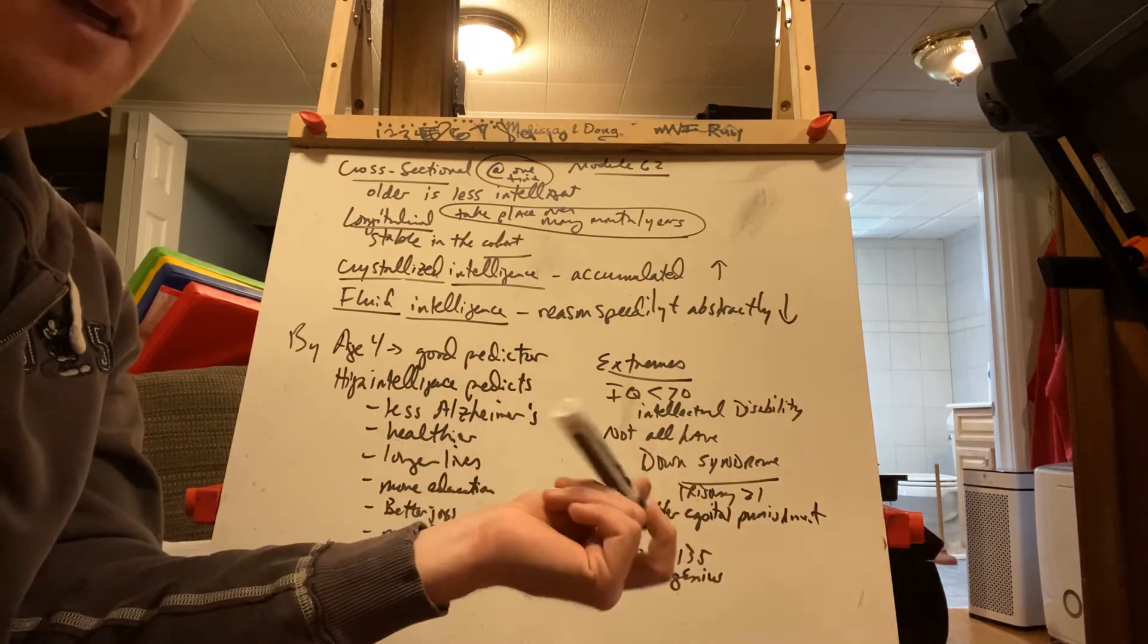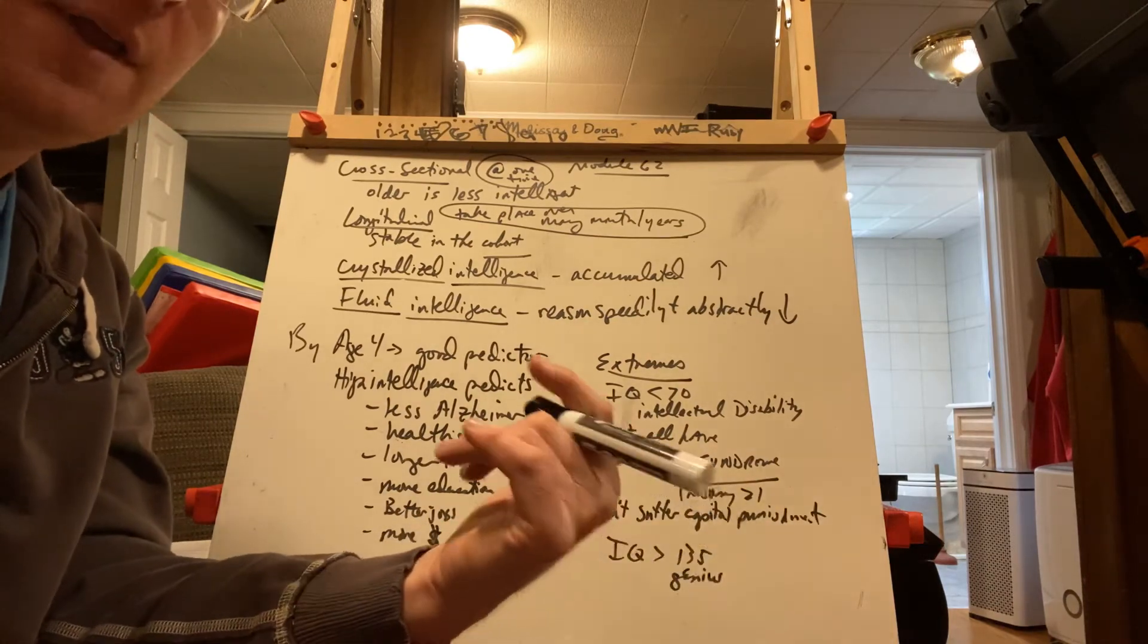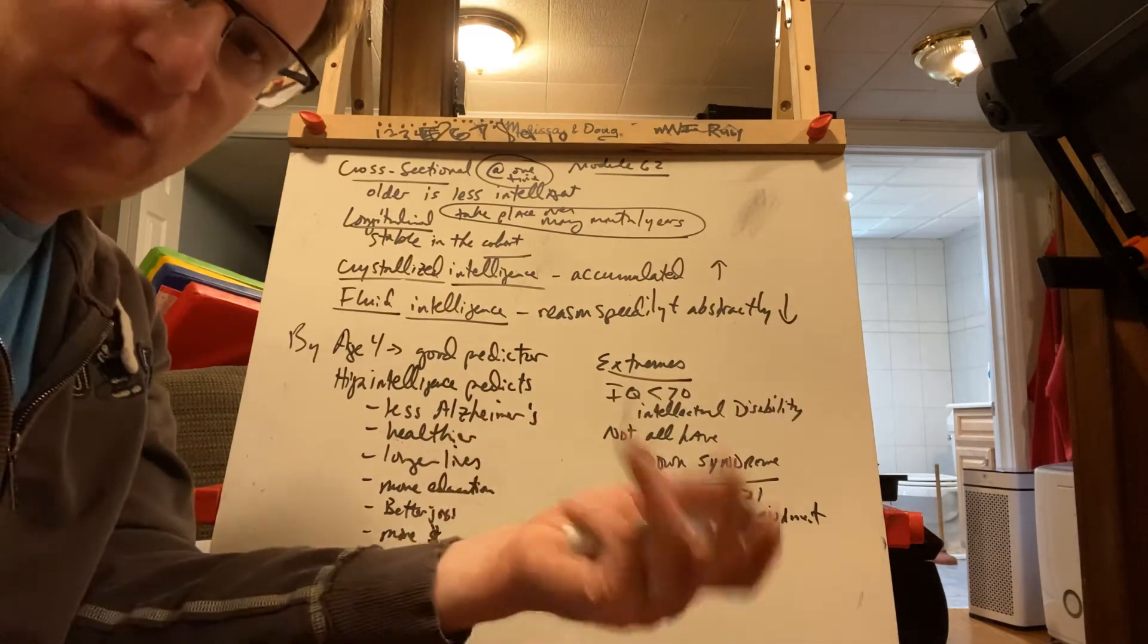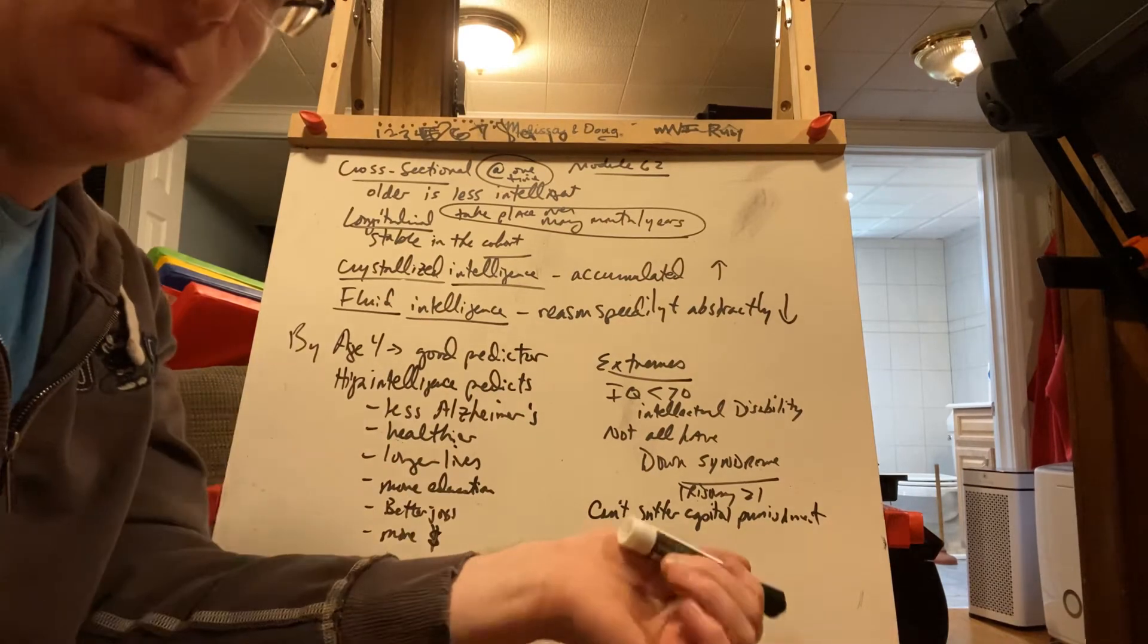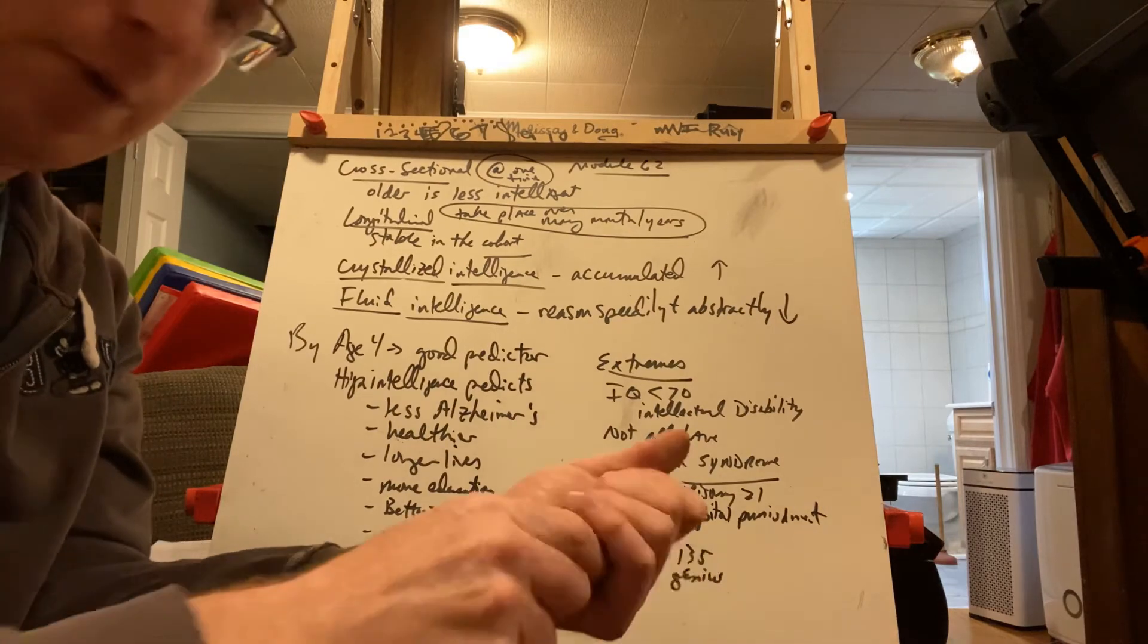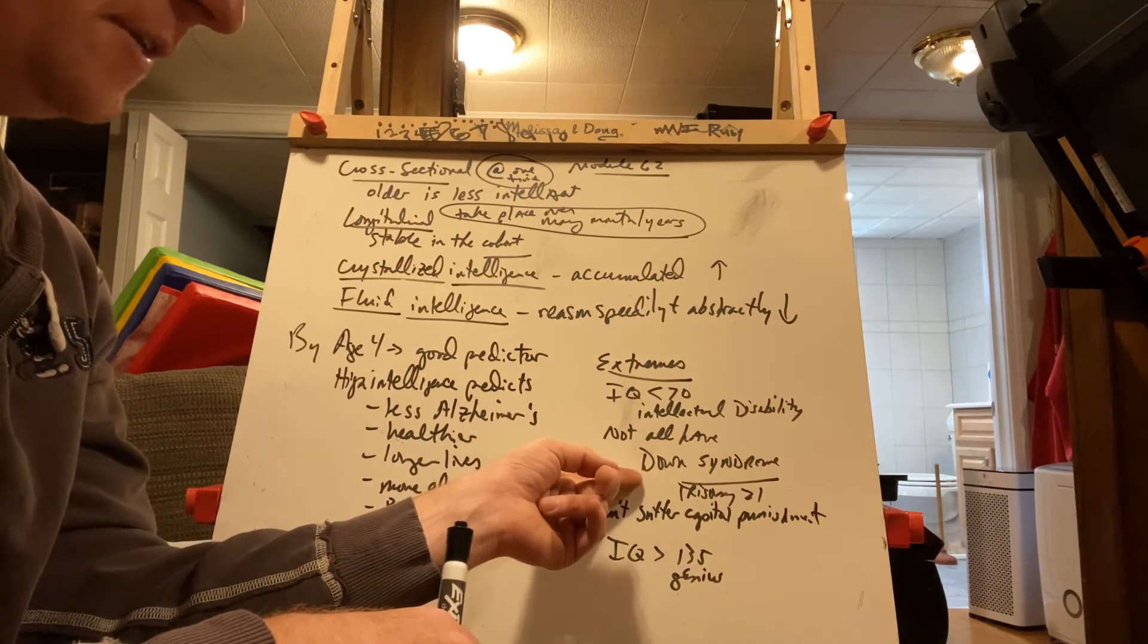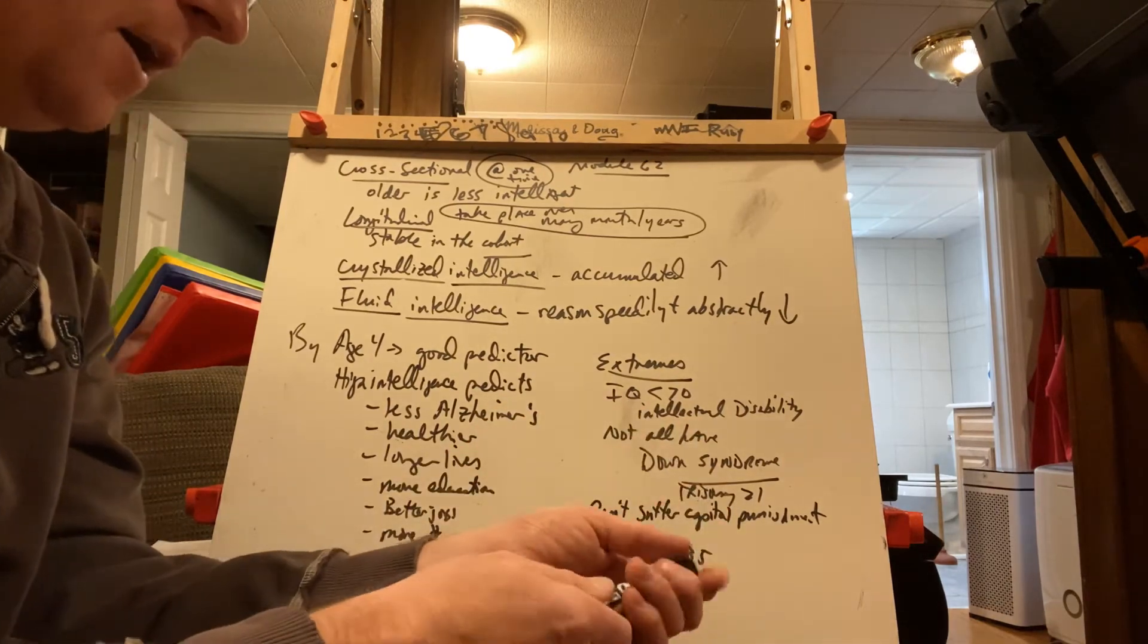Or you might be a savant, which means usually you have one really great skill - like remembering everybody's birthdays, or knowing what day of the week a birth was. If you told them a date, they would know it, but then they couldn't do anything else. An example would be Rain Man - if you ever saw Rain Man with Dustin Hoffman and Tom Cruise, that's an example. Down syndrome is called Trisomy 21. Most people with Down syndrome have an IQ of less than 70, but not necessarily.